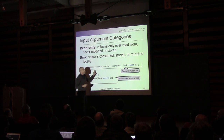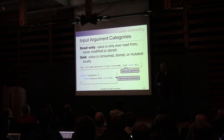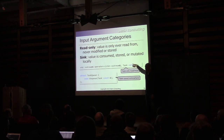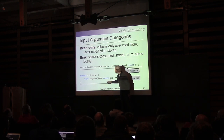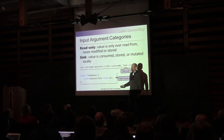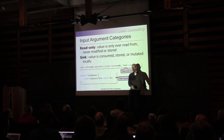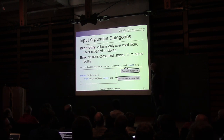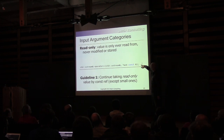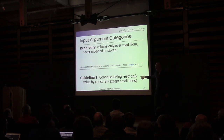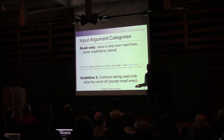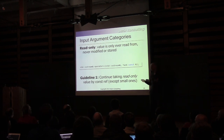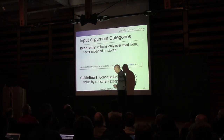A good example of a read-only would be an ostream inserter — you only ever read from stuff when writing one. And say you've got a task queue and a task — the enqueue function is going to take a task and put it in the queue, so the task will probably be saved somewhere. My first guideline: it's okay to continue taking read-only input parameters by const ref. If you've got a small one, you can pass it by value — that's fine.